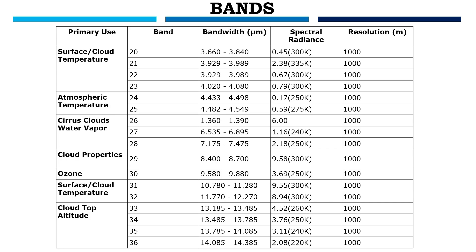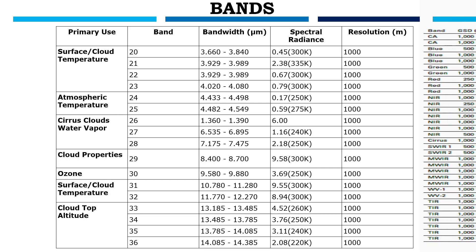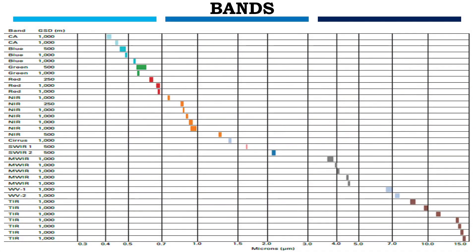For cloud properties, we use band 29. For ozone, we use band 30. For surface and cloud temperature, we use bands 31 and 32. For cloud top altitude, we use bands 33 to 36. All these bands have 1000-meter resolution. These are the spectral bands of the MODIS dataset.